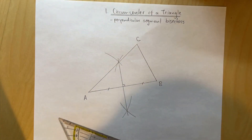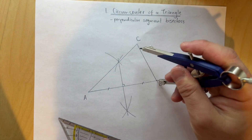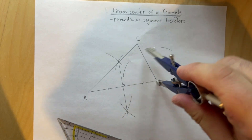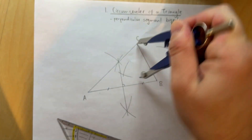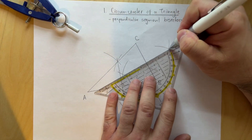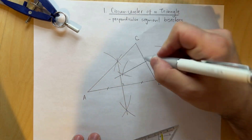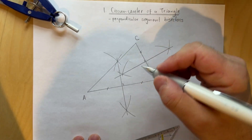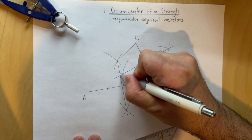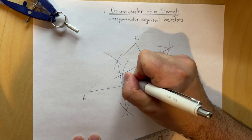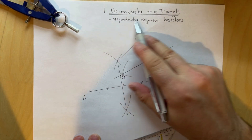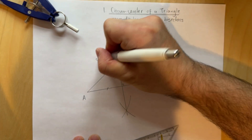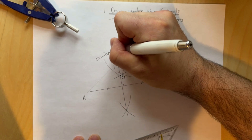Now we do the same thing with another segment, say segment BC. We make an arc above and below, and then from point C we draw another arc. We connect the points of intersection and we have another perpendicular bisector. It turns out that these perpendicular segment bisectors intersect at a point, which I'm going to call O, denoted as the circumcenter of the triangle.